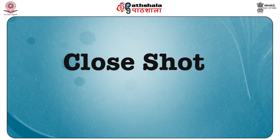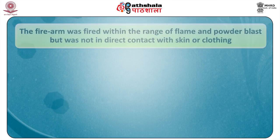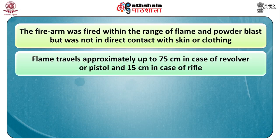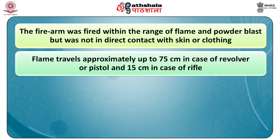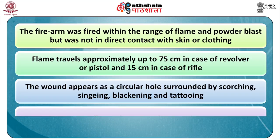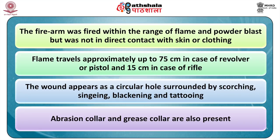In a close shot, the firearm is fired within the range of the flame and powder blast but was not in direct contact with the skin or clothing. This flame may travel approximately up to 75 cm in case of a revolver or pistol and 15 cm in case of a rifle. The wound appears as a circular hole surrounded by scorching, singeing, blackening, and tattooing. Abrasion collar and grease collar are also present.